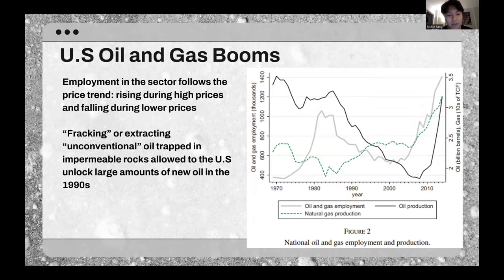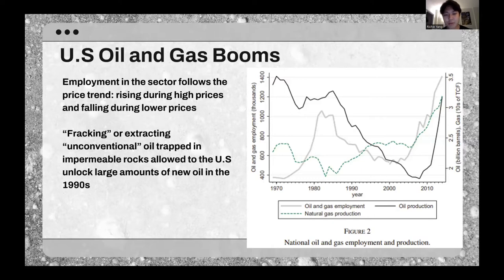Another thing to note is that in the late 1990s, a new way of extracting oil called fracking — extracting oil from impermeable rocks considered unconventional oil — became more commercially viable, allowing the U.S. to unlock a lot more oil.